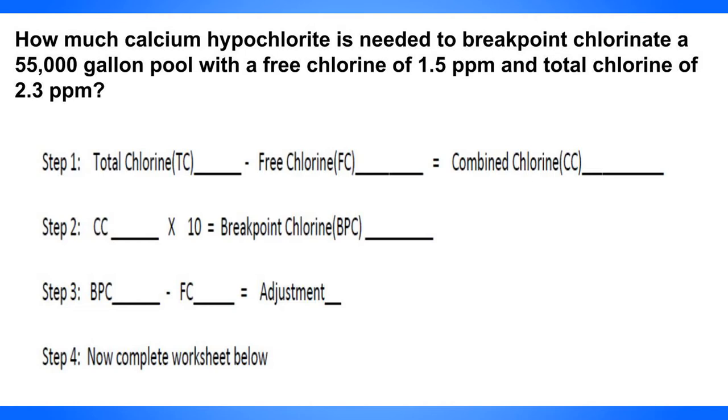How much calcium hypochlorite is needed to breakpoint chlorinate a 55,000 gallon pool with a free chlorine of 1.5 ppm and a total chlorine of 2.3 ppm?